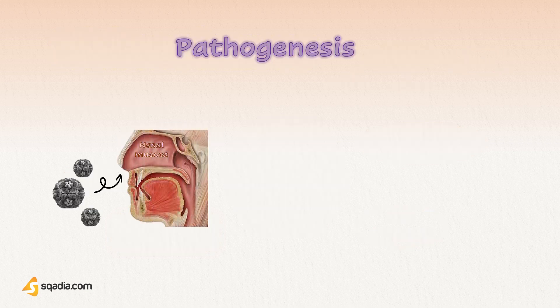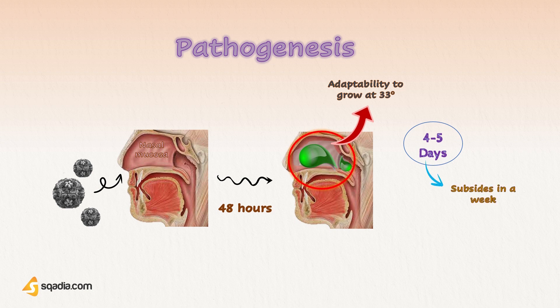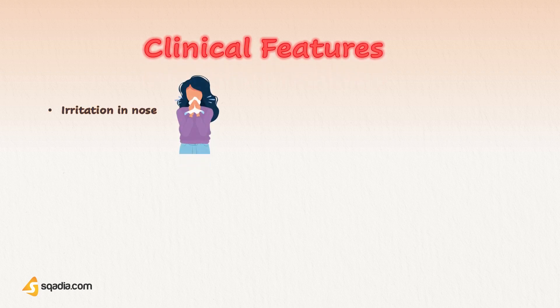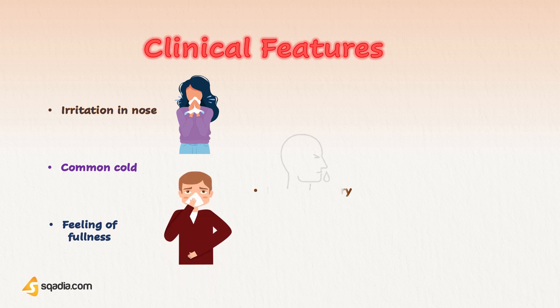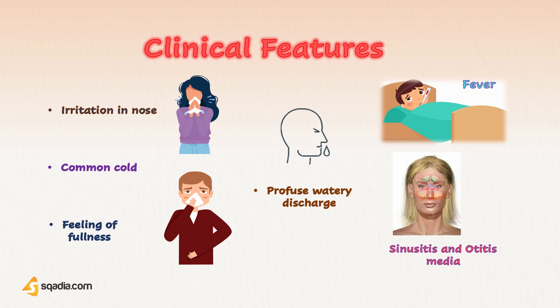Rhinovirus remains localized to the point of entry — the nasal mucosa — where it provokes inflammation with edema and copious secretions within 48 hours. Localization to the nose is perhaps due to adaptability to grow at 33 degrees Celsius. The virus runs its course for four to five days and, unless complicated by superadded bacterial infection, subsides completely within one week. Clinical features include nasal irritation, common cold, feeling of fullness, and profuse watery discharge. Fever may manifest only in children. Sinusitis and otitis media are possible complications, and the infection may exacerbate chronic bronchitis and asthma.